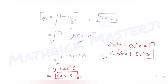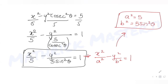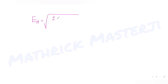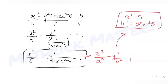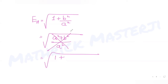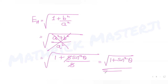The eccentricity of the hyperbola is √(1 + b²/a²) = √(1 + 5sin²θ/5) = √(1 + sin²θ). So the eccentricity of the hyperbola is √(1 + sin²θ).